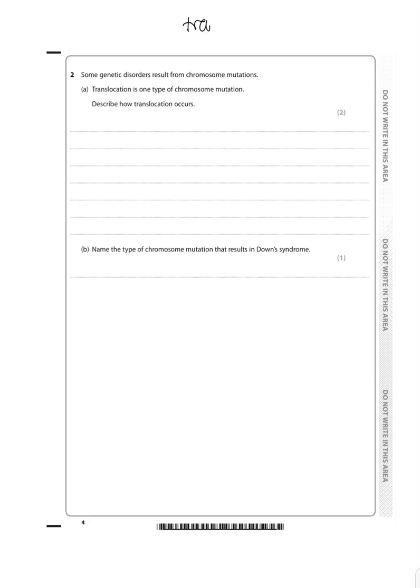Well, trans means opposite sides, and location is the area. Translocation happens in non-homologous chromosomes.